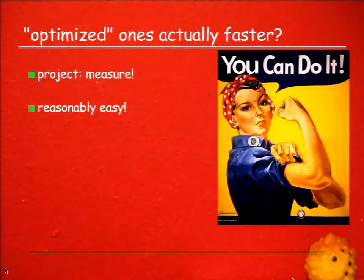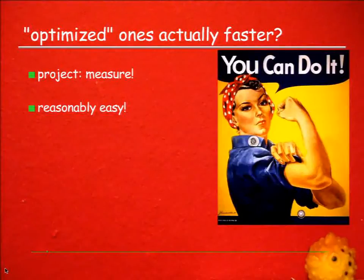So there's a task here. Take those, benchmark them, and figure out whether they are actually any faster than the generic C version. Thank you.